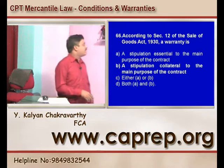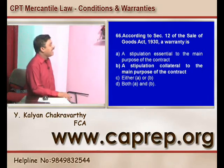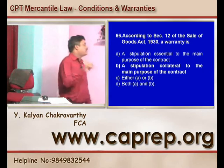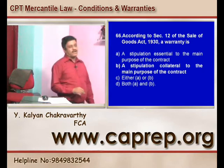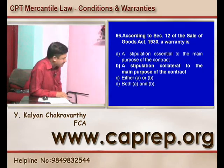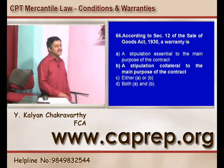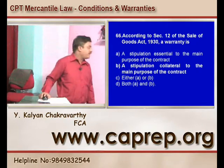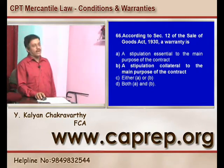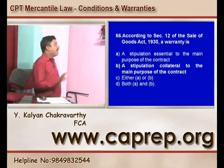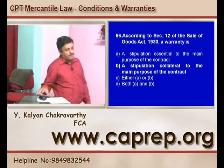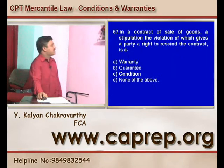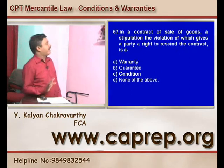Question 66: According to section 12 of the Sale of Goods Act 1930, a warranty is a stipulation collateral to the main purpose of the contract. B is the right answer — we have discussed many times that warranty is a stipulation collateral to the main purpose of the contract.